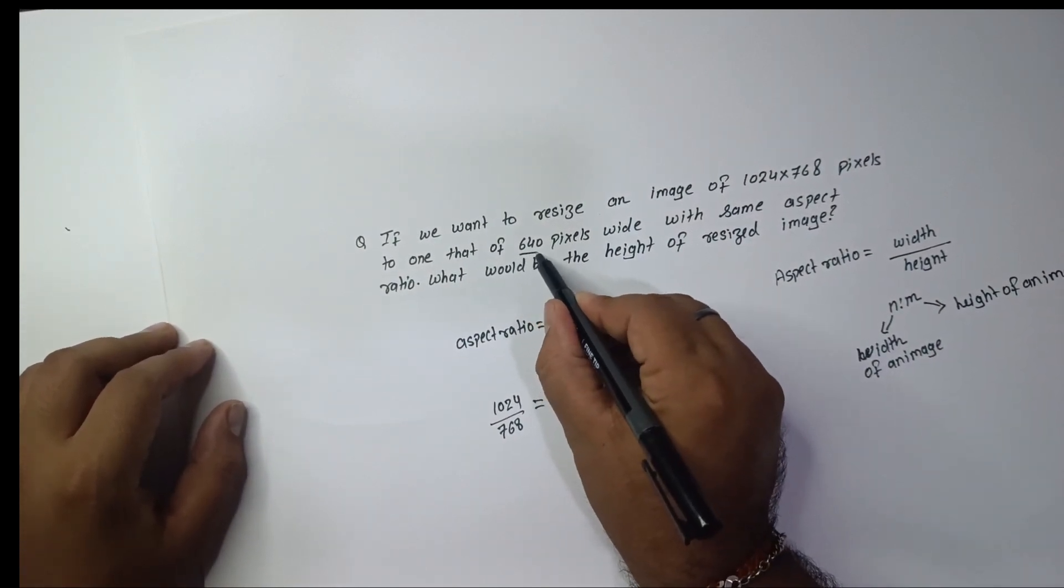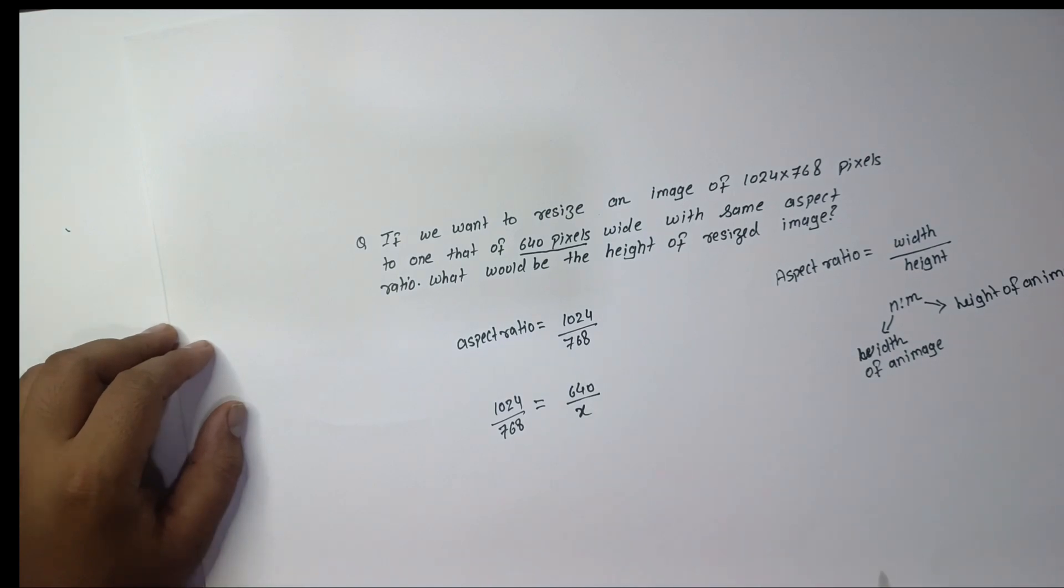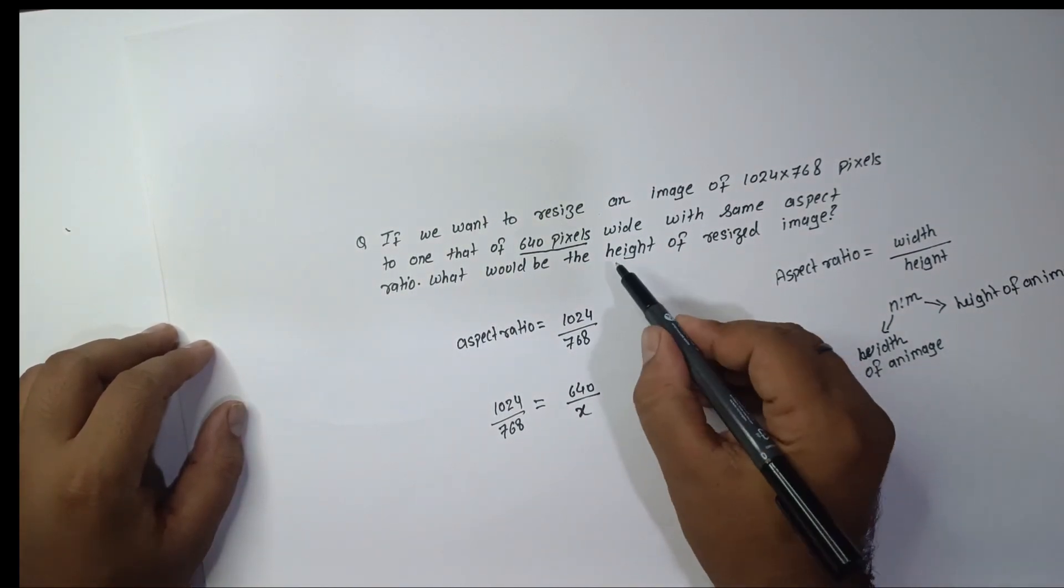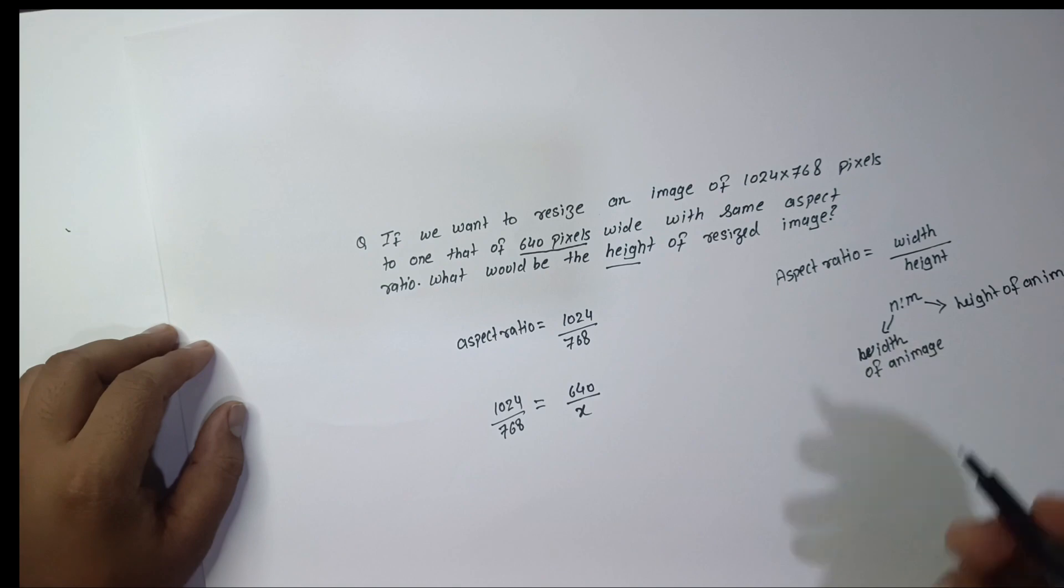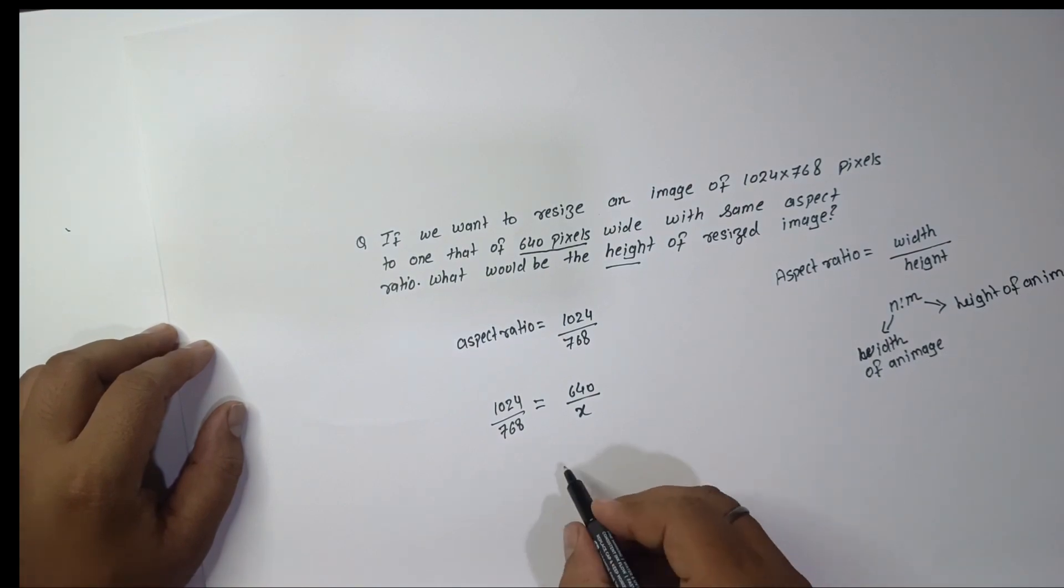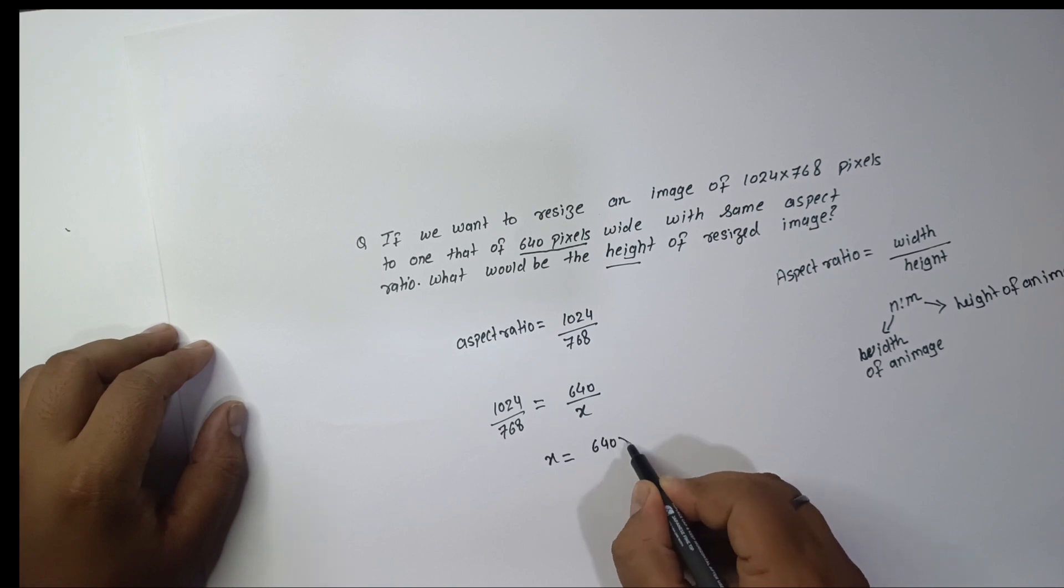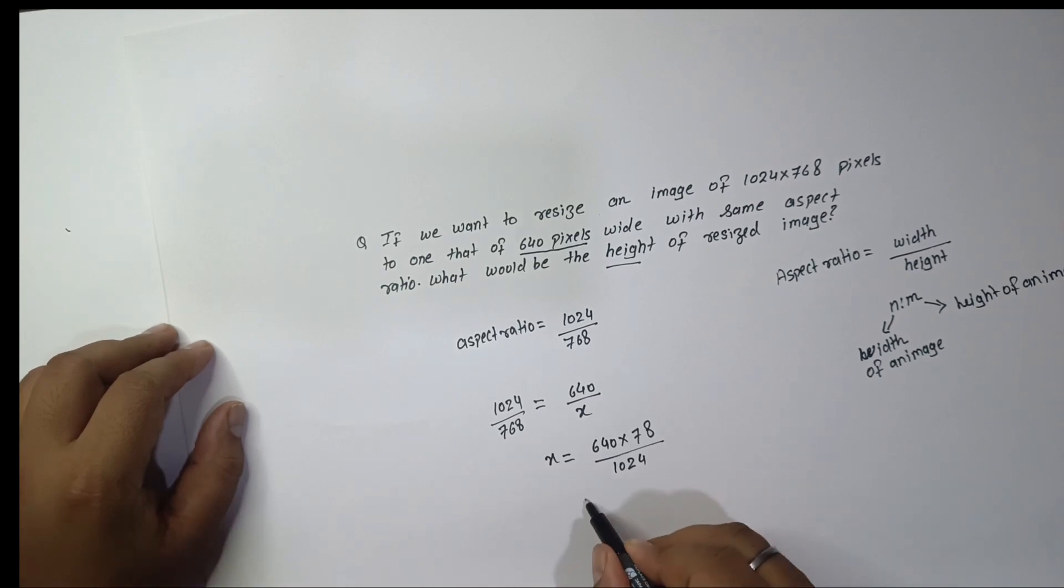They have provided that the resized image is 640 pixels, and they have asked about the height of the resized image. So now X will be 640 times 768 divided by 1024.